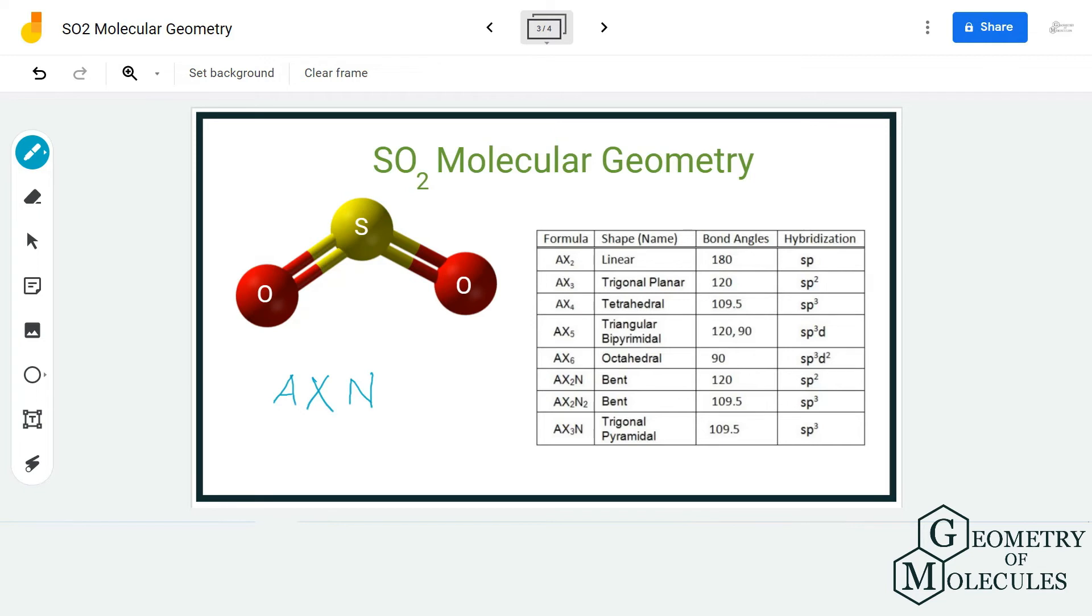Here we have sulfur as the central atom. There are two oxygen atoms forming bonds to the sulfur atom, which means we have AX2, and there is one lone pair of electrons. So the notation is AX2N for SO2.